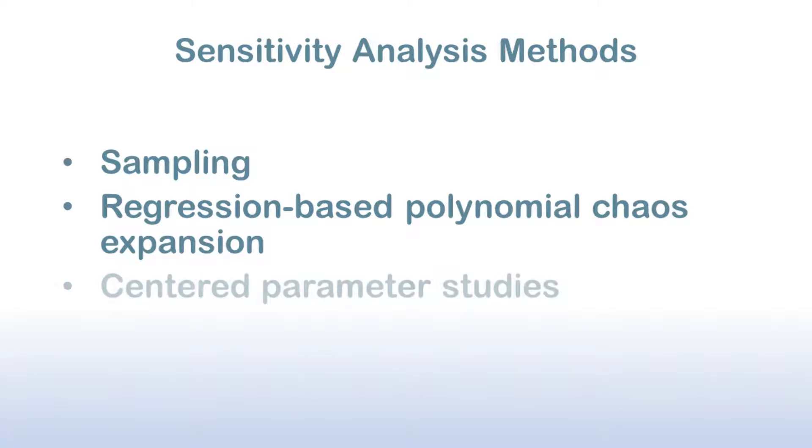Centered parameter studies yield univariate effects of each variable, so are not confounded by variable interactions. This method can be applied as a precursor to sampling if budget permits, or an alternative if you are budget-constrained and univariate suffices.